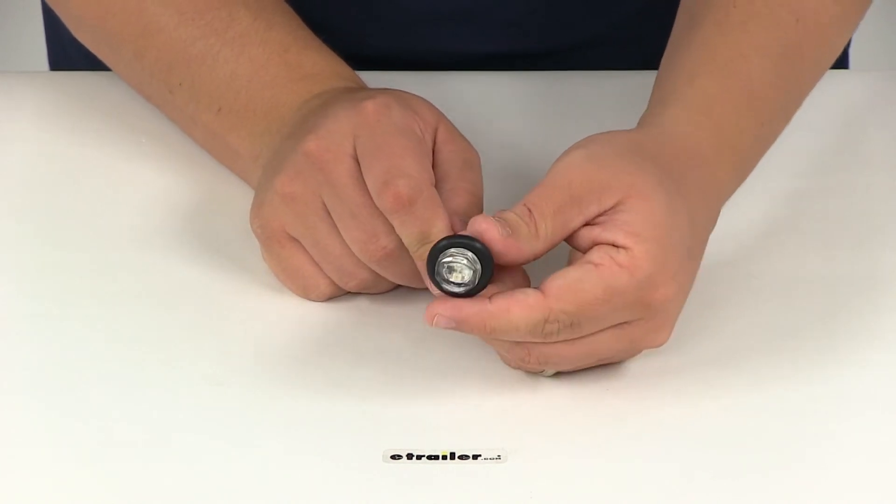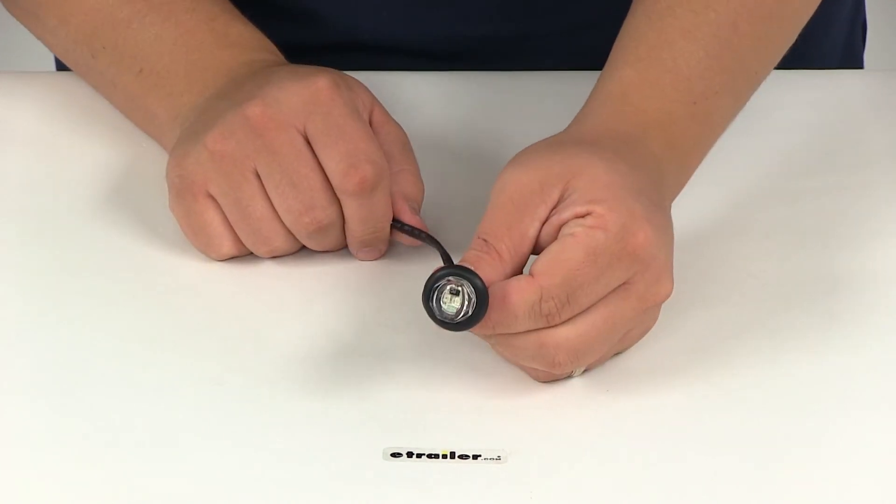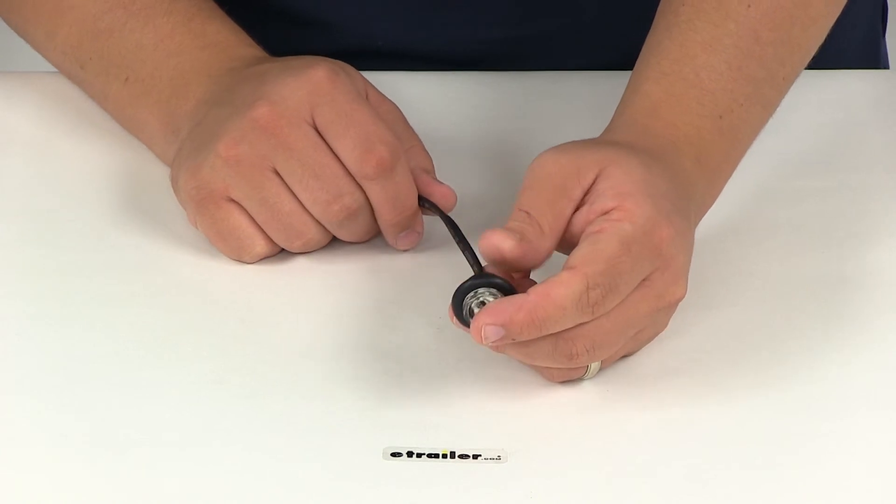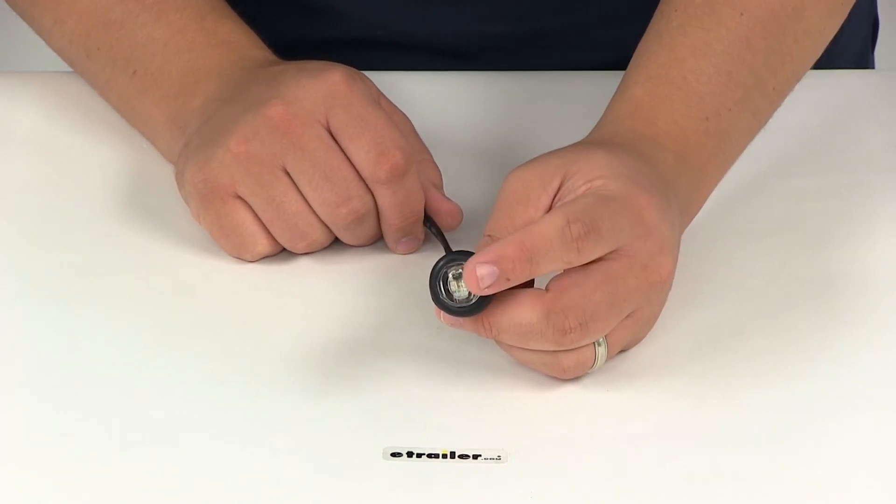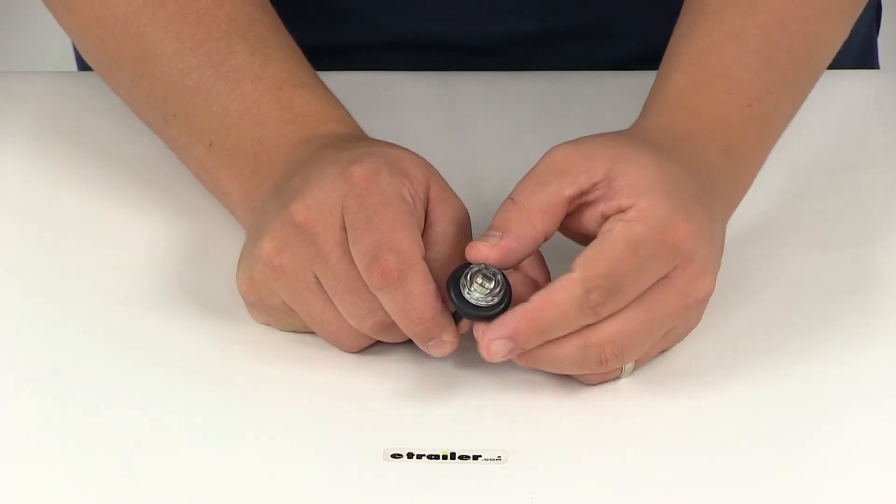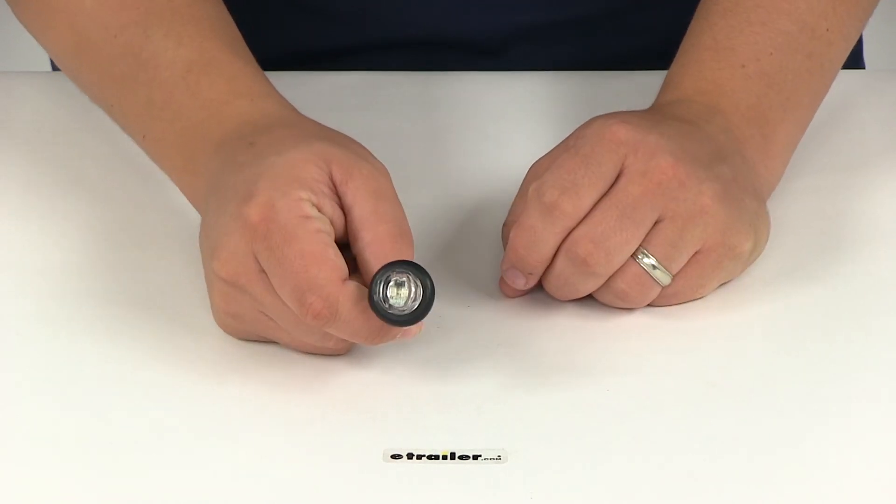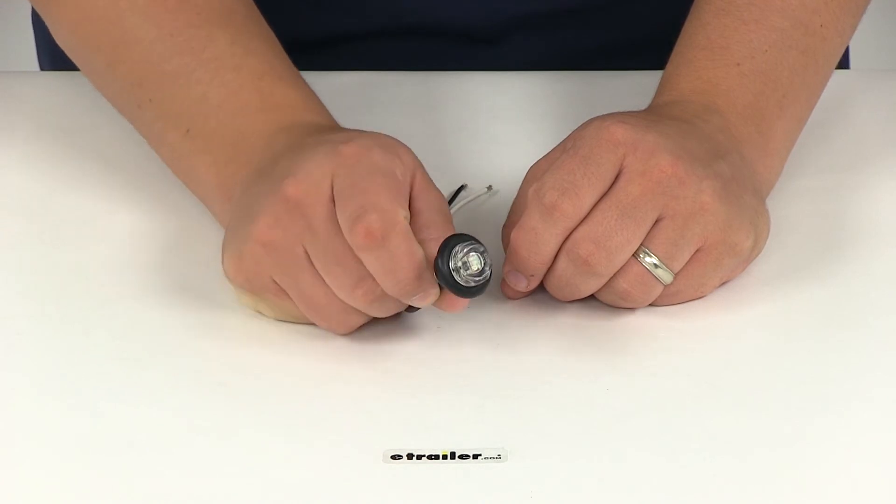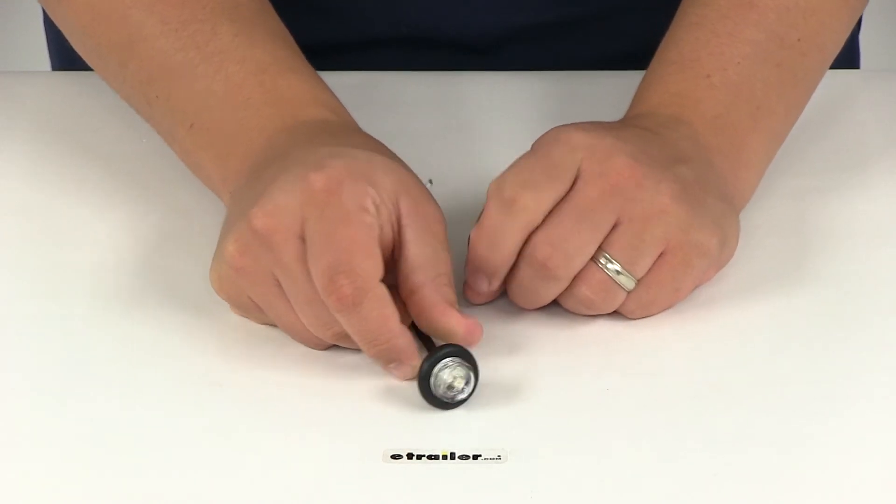The power draw when using this is 0.047 amps at 12 volts. It has two diodes. The installation is very simple. It's a recessed mount with a PVC grommet which is included. Your installation requires an 11/16 of an inch hole at the desired location for this light to sit in.